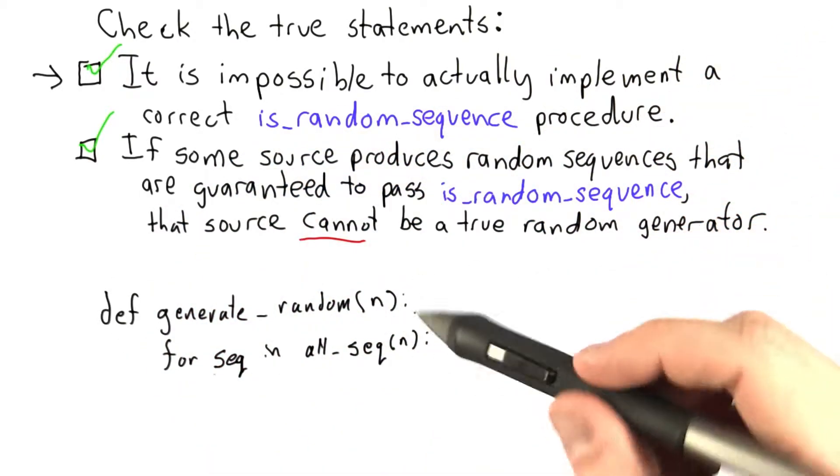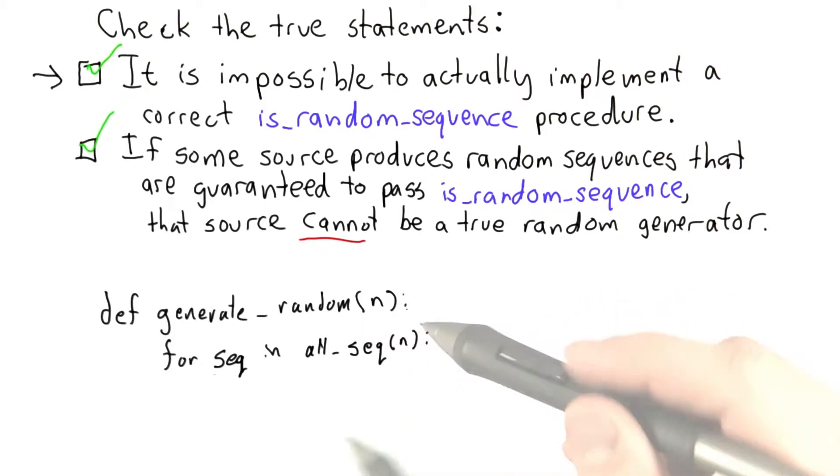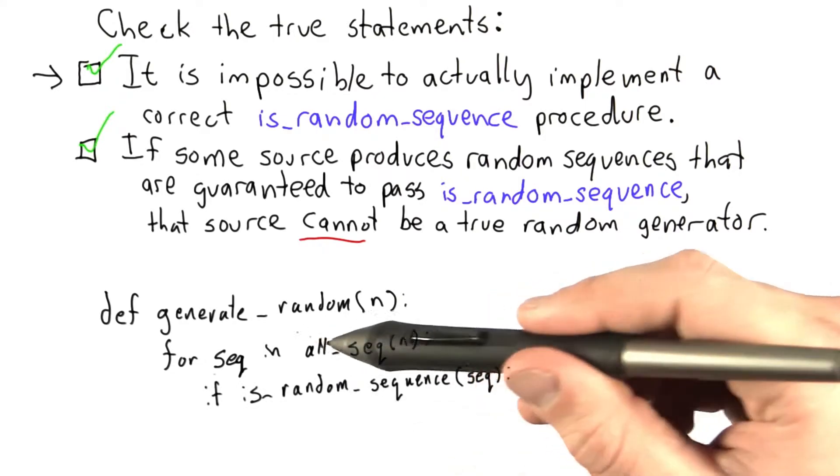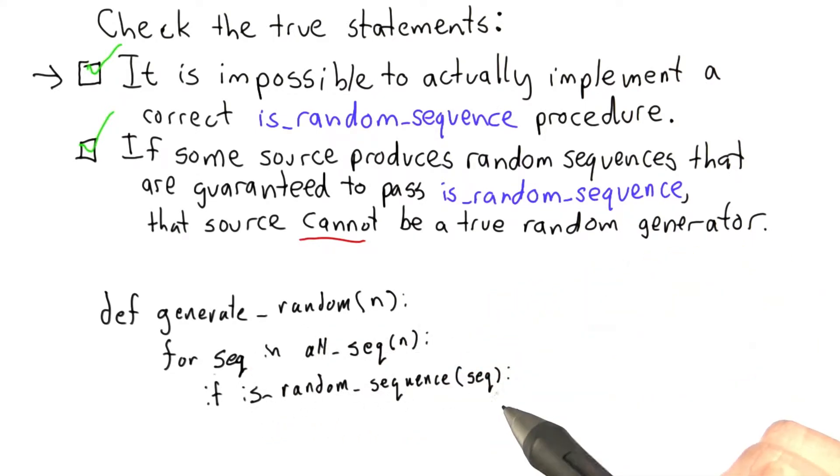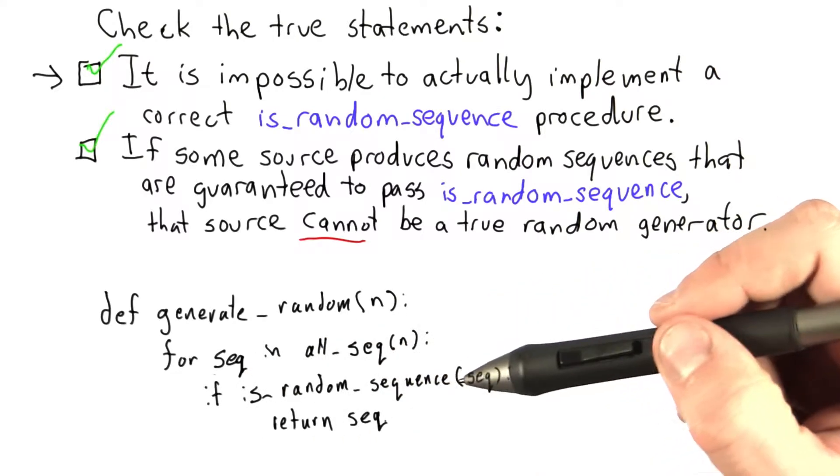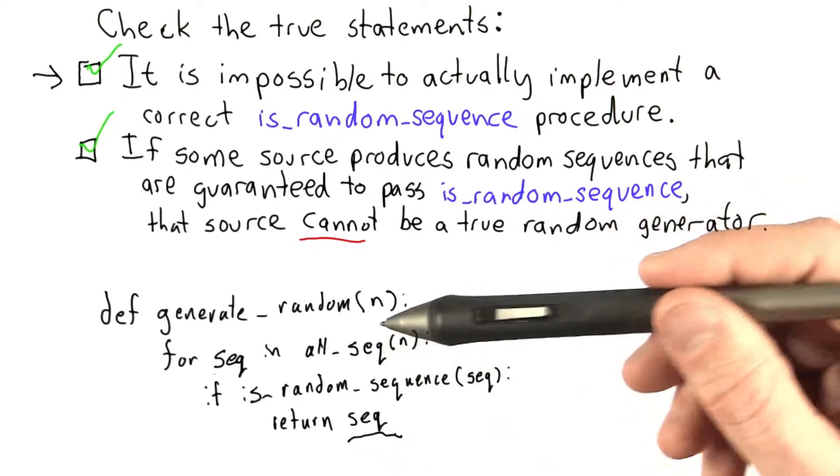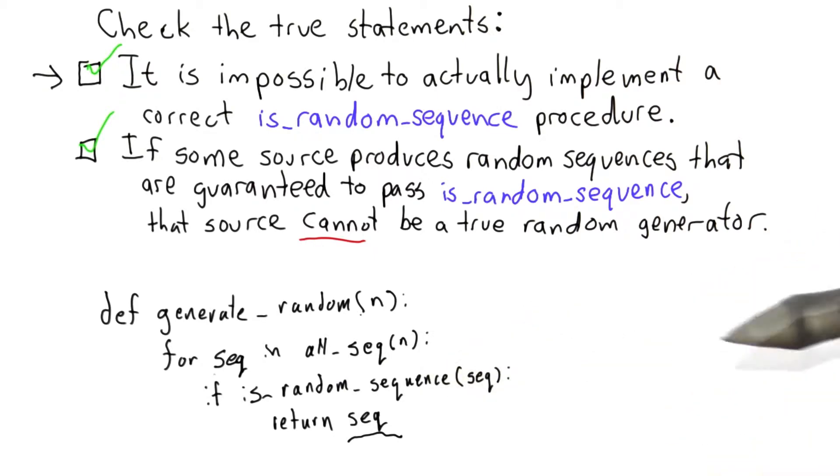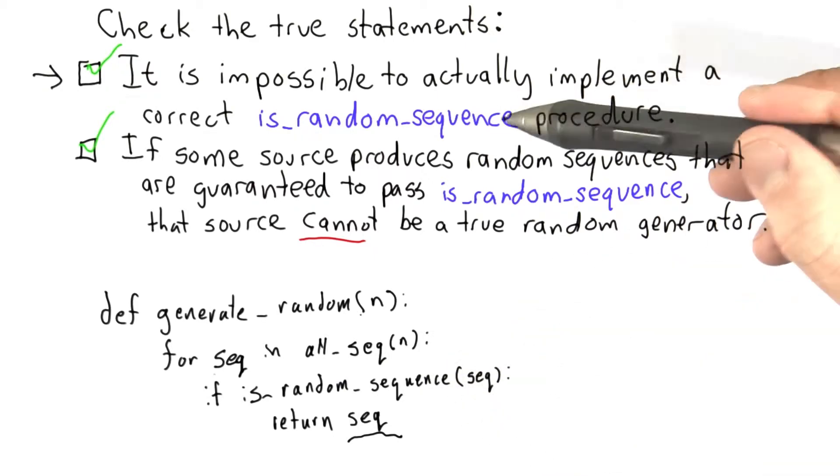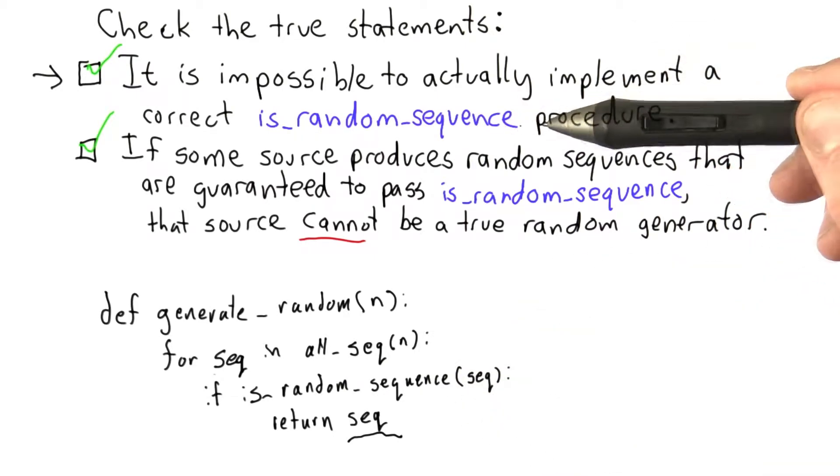So the first thing we're going to do in our generate_random function is loop through all the sequences of length n. Then, for each sequence, we will run our isRandomSequence test. And if that test returns true, we will return the sequence. We have now created a function that generates a random sequence, which as we showed in class is impossible. Therefore, isRandomSequence is impossible.